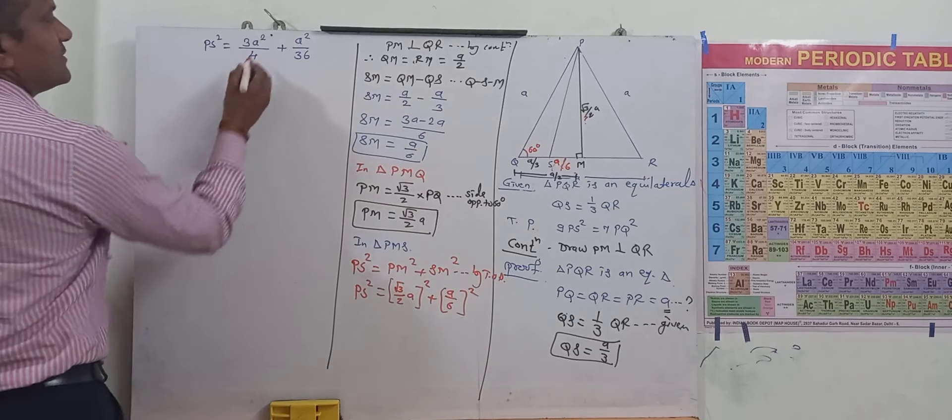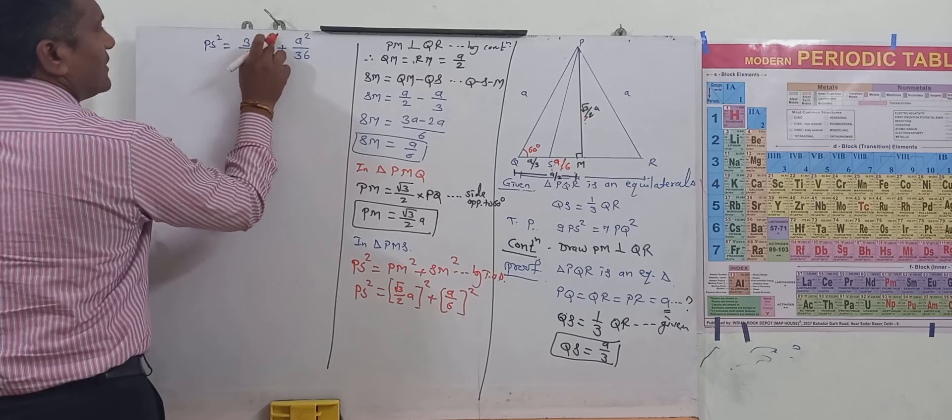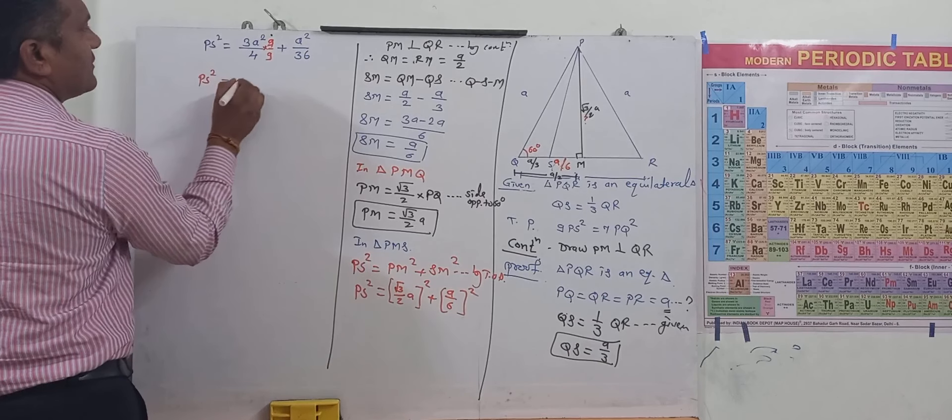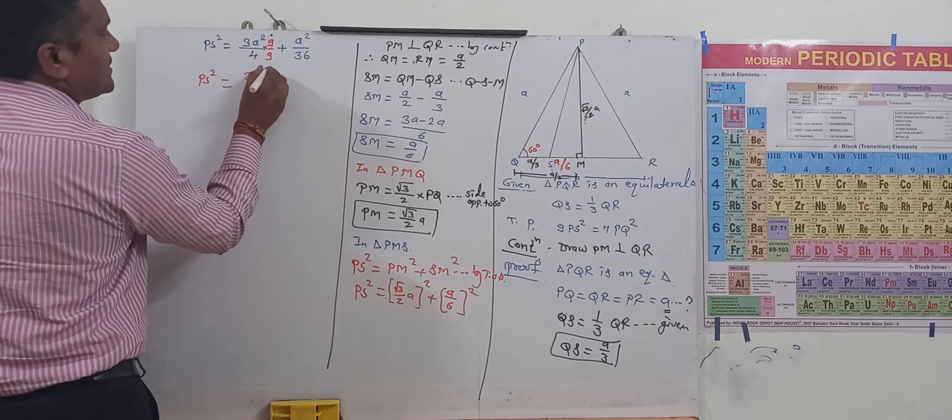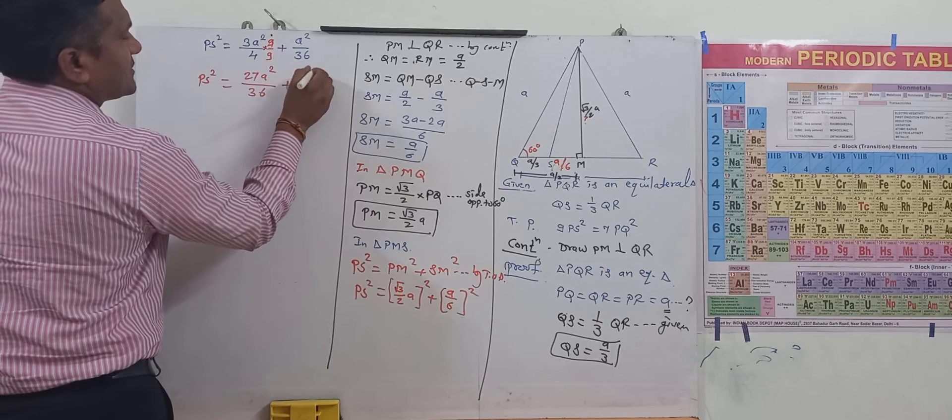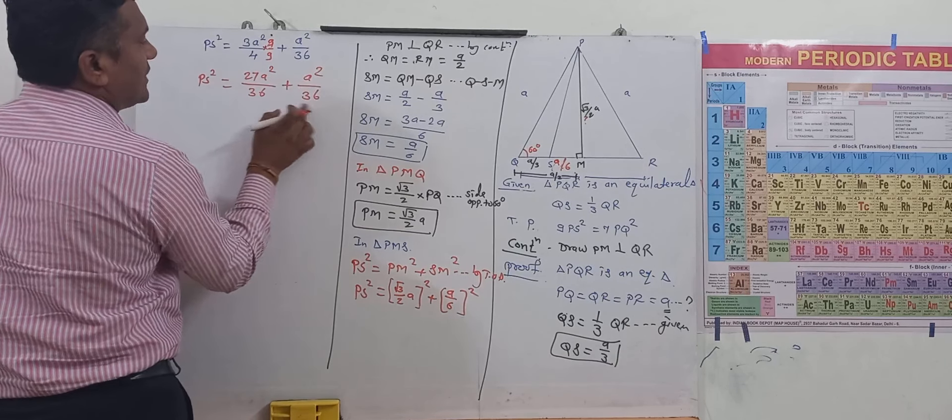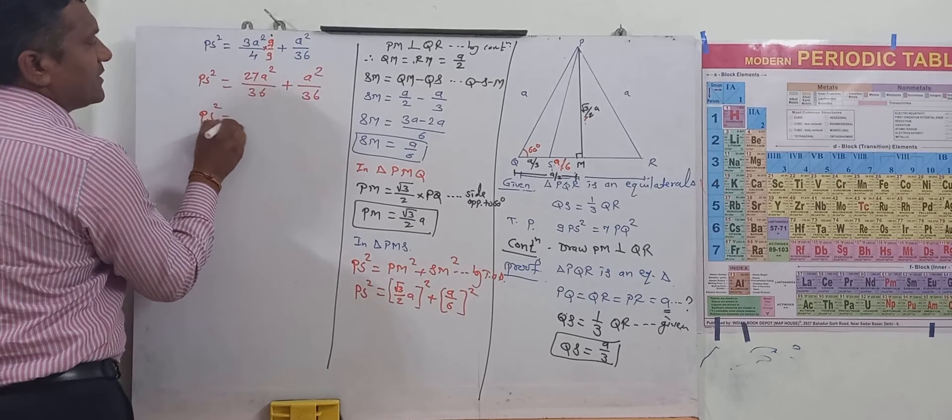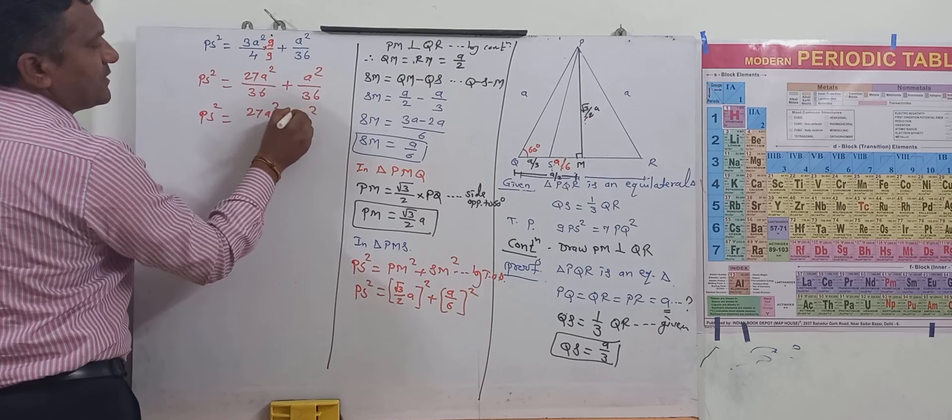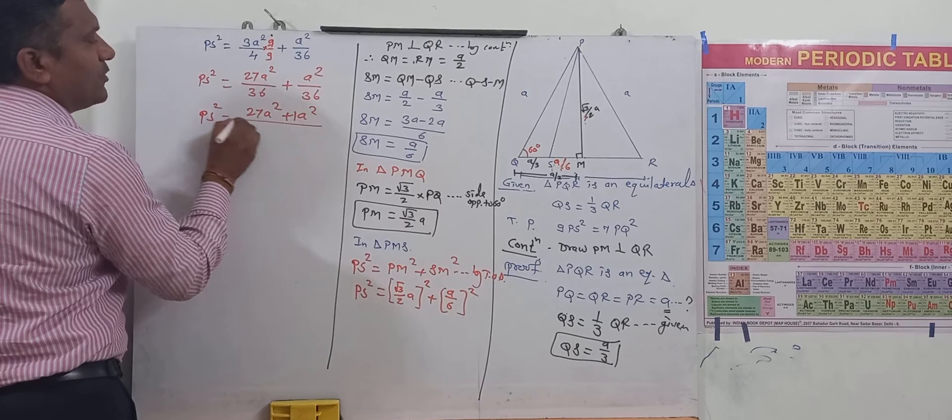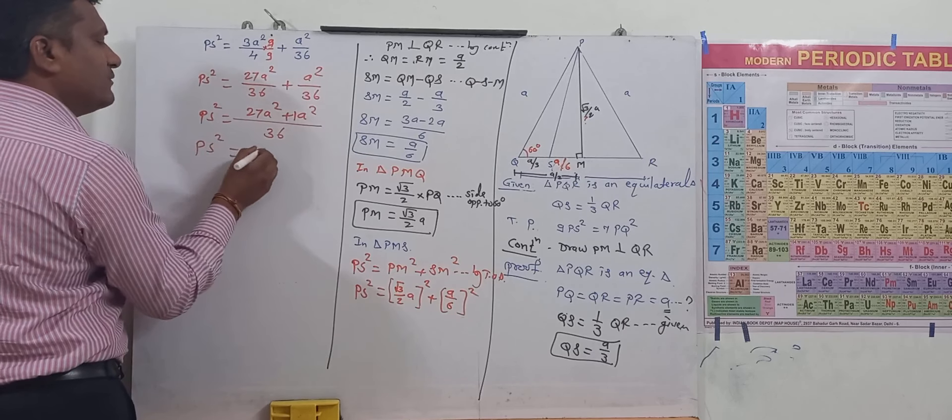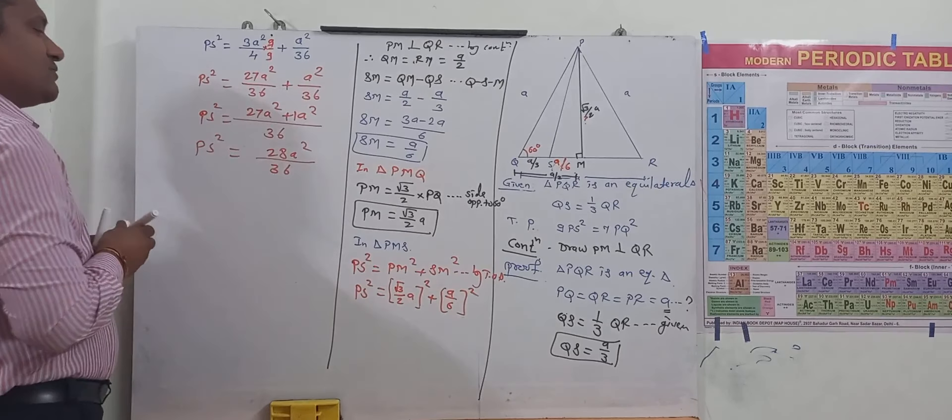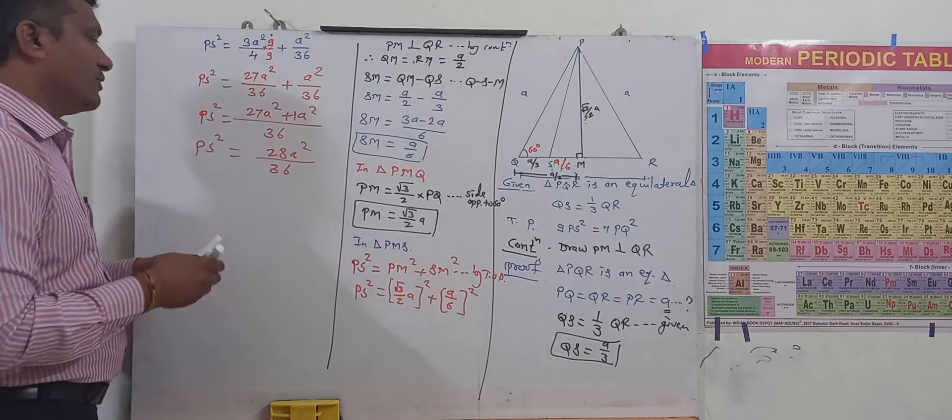Then denominator we have to make same. What we will do? We multiply this by 9 upon 9, then denominator same ho jayega. So it will be PS square equal to, 9 into 3 is 27 A square upon 36 plus A square upon 36. Look at now the denominator become equal. So PS square equal to 27 A square plus A square upon 36.